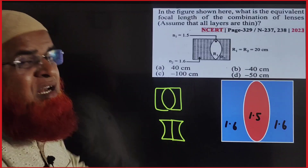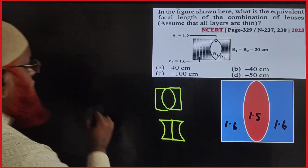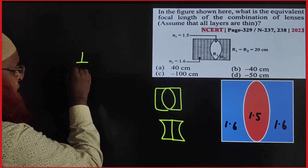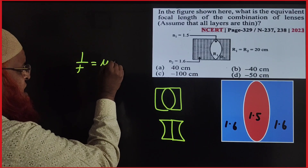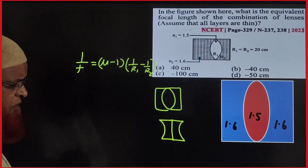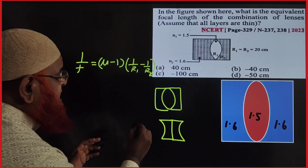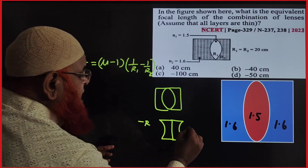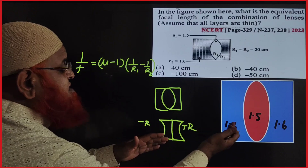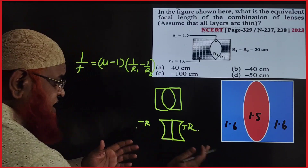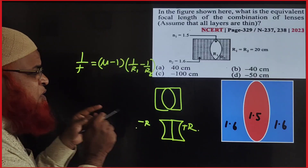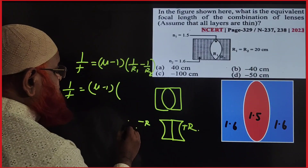For this combined concave lens, we can use the lens maker's formula to find the focal length. The lens maker's formula is: 1/f = (μ - 1)(1/R1 - 1/R2). This curvature has a negative radius and the other has a positive radius — the center of one is on the left side and the other on the right side. This is an equi-concave lens.